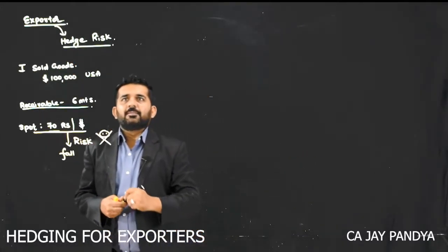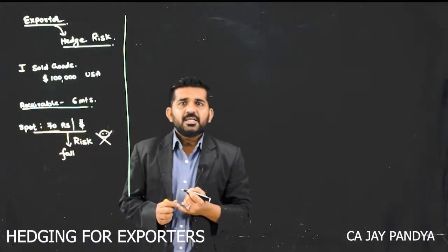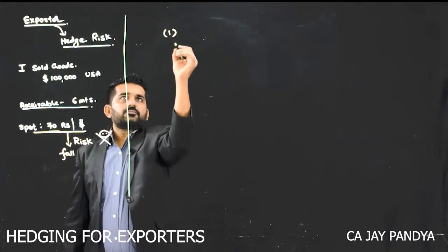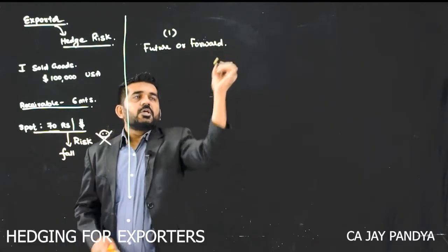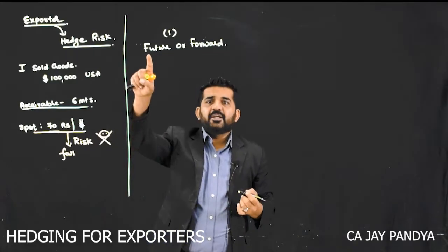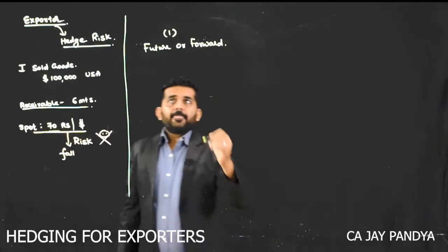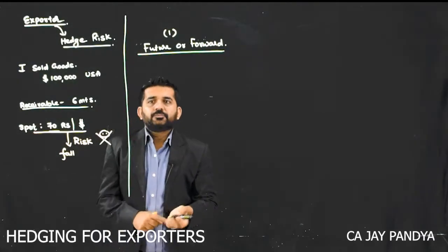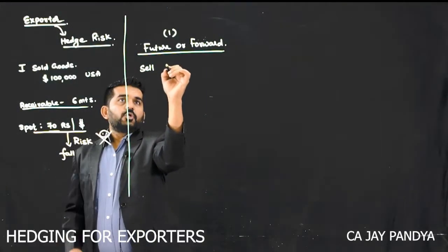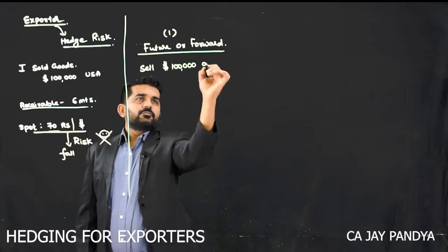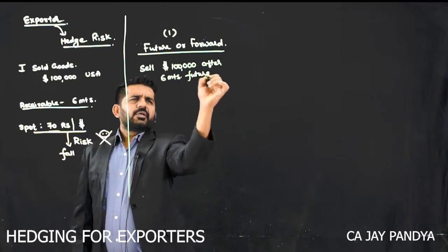There are many instruments available. I will be talking about some basic instruments to hedge the risk for exporters. Number 1 is a future or forward. What is the difference between future and forward? Future is trading in lots, while forward is traded one-to-one over the counter. What to do? Very simple — sell dollar 1,00,000 after 6 months in future or forward.